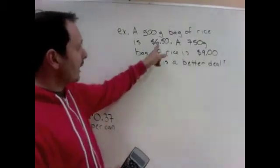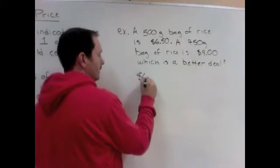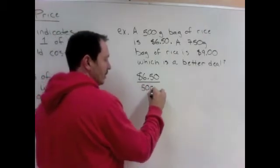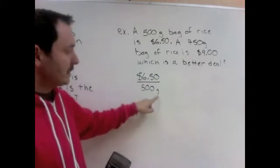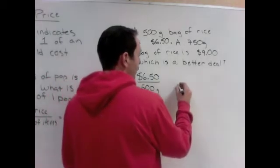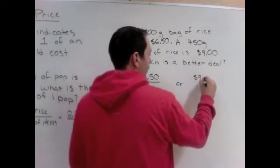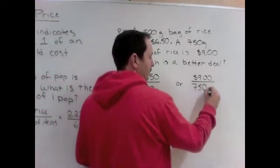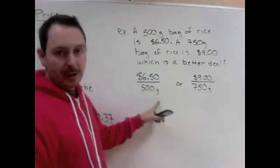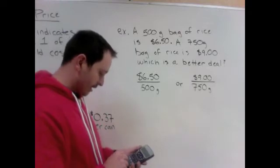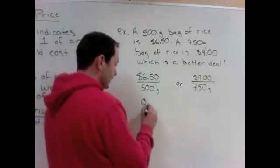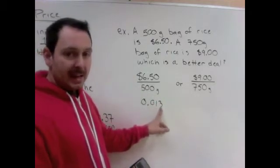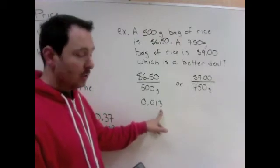So in this case, we're going to divide the price, $6.50, divide by the number of items. And the number of items in this case is, there are 500 grams. So we're going to find the price per gram. And then we're going to compare it to the $9 bag that is 750 grams. So price per gram. So if we do 650, divide by 500, the price is a little more than 1 cent, or it's 1.3 cents per gram.